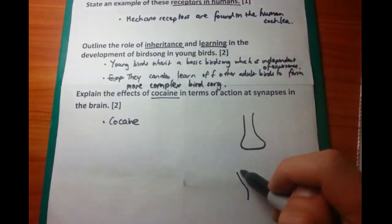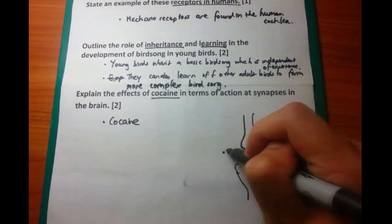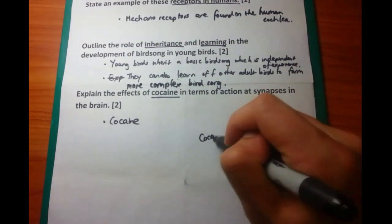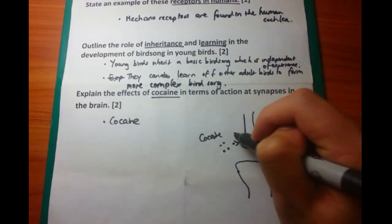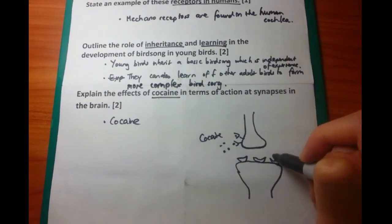Now before I get sidetracked, let's talk about the effects of cocaine in terms of action at synapses in the brain. And what I'm drawing here, which you can do in the exam as well, is to draw the presynaptic knob as well as the postsynaptic membrane and also the cocaine there.